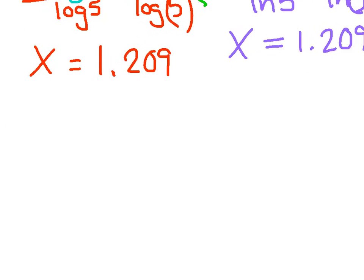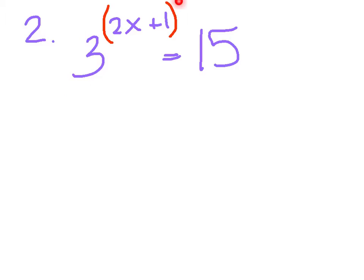Let's go ahead and try a second example. Number 2: 3 to the 2x plus 1 equals 15. You'll notice there's more than just an x hanging up in that exponent. There's a 2x plus 1. And I want to make sure on every paper we are putting parentheses around that exponent. That's a huge deal. We need to keep the 2x plus 1 grouped together at all times.